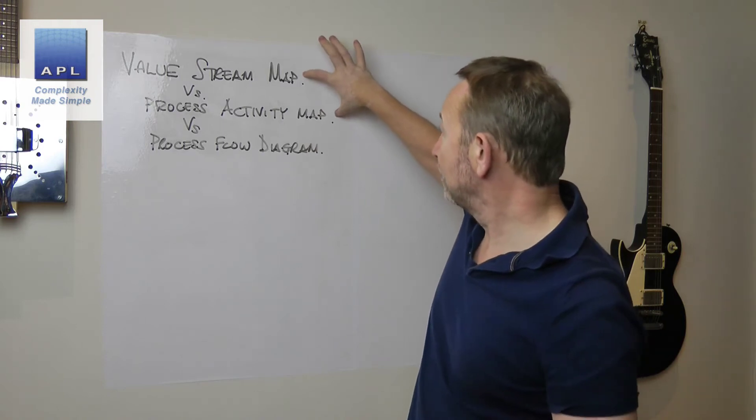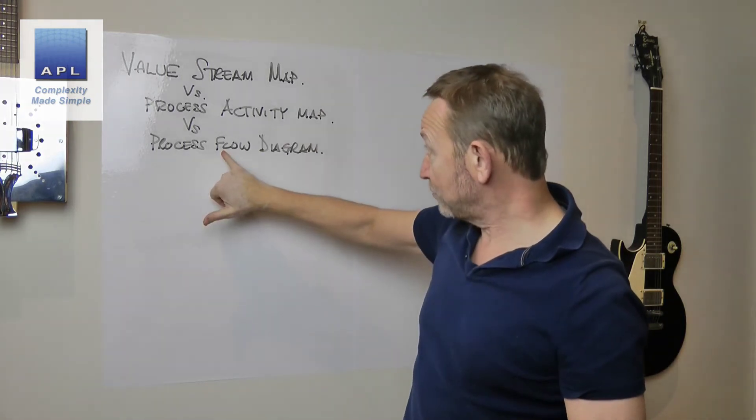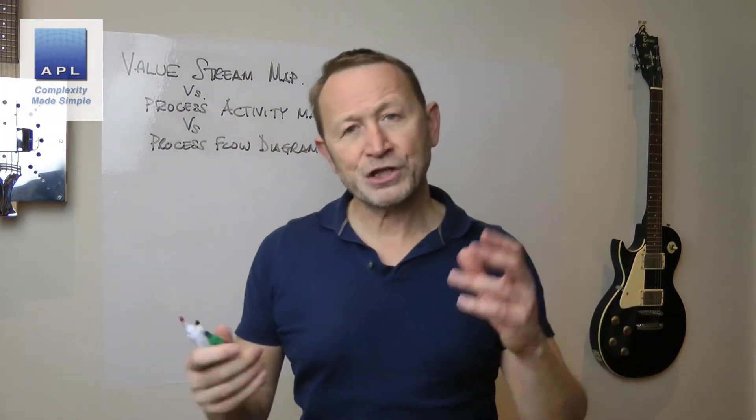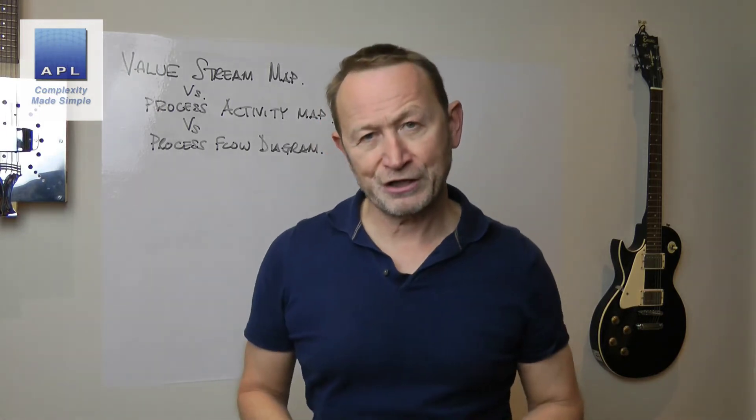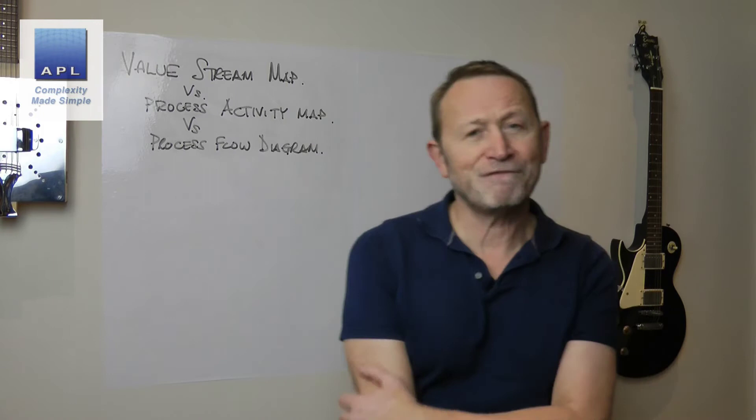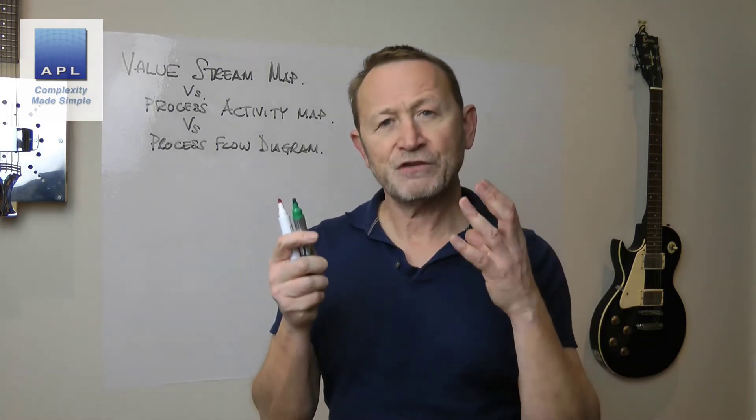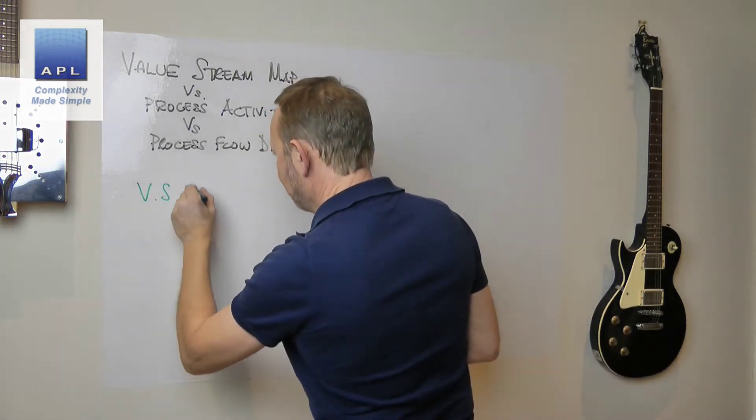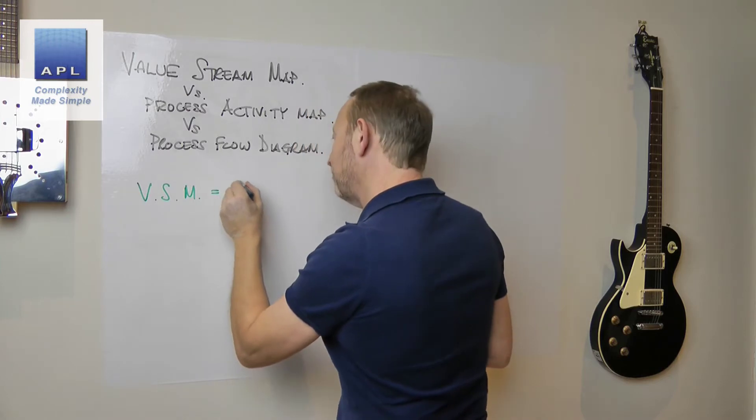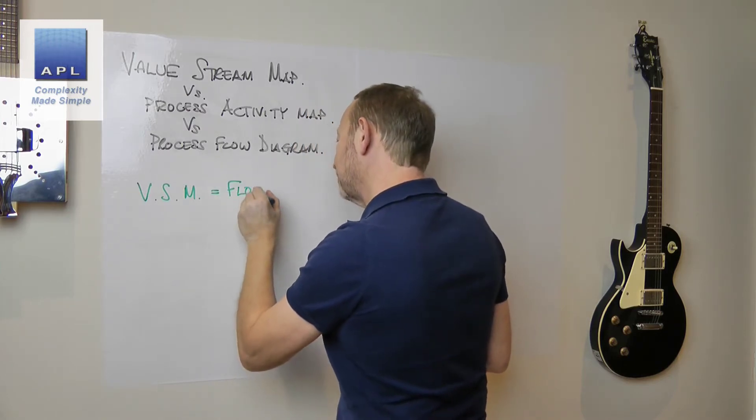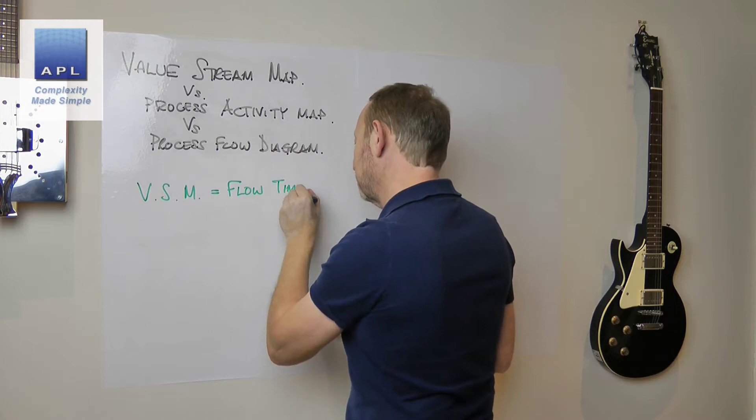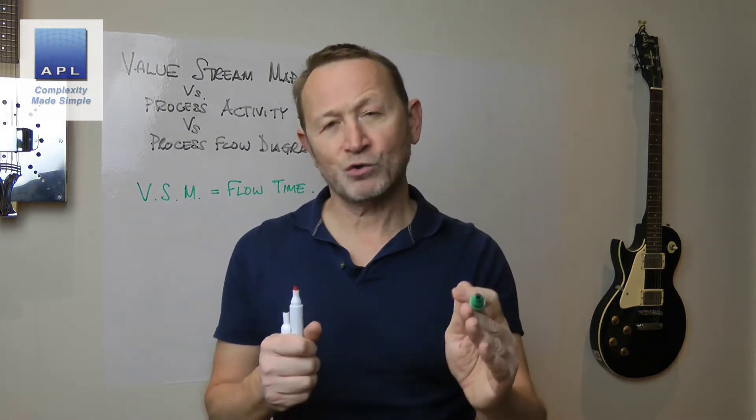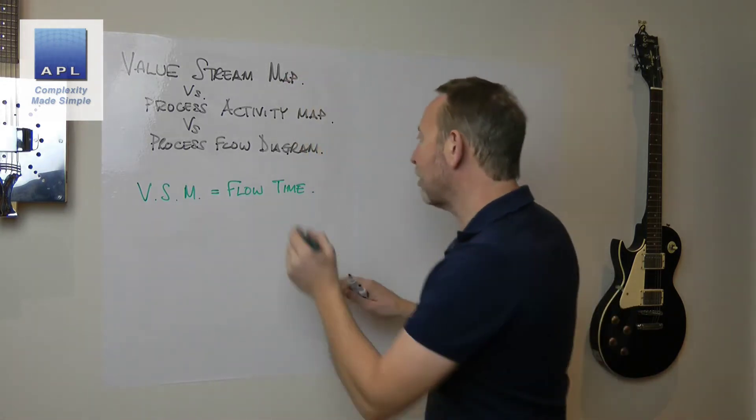These are the three we're going to look at. All three are different, although I do tend to use these two together. This is about detail, this is about big picture. Let's show you the three diagrams. First of all, the value stream map. I'm just going to call it VSM. What does it do? It measures flow time, the total flow time for one order.